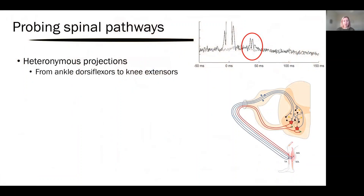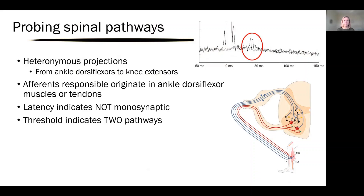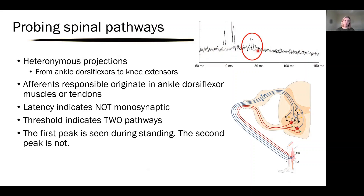We can know some things about that pathway: the nerve goes from the ankle dorsiflexors — muscles on the front of the shin — to muscles on the front of the thigh. The particular sensory afferents we're studying are from the muscles or the tendons. The amount of time it takes from stimulus to response tells you how many of these little networks the information has gone through. We can see two peaks and can manipulate them differently, which tells us they reflect two different pathways.